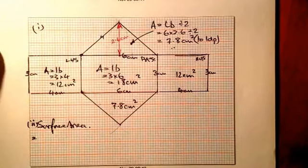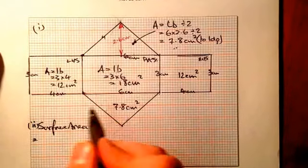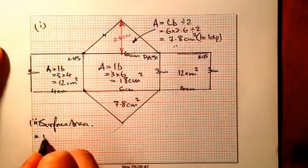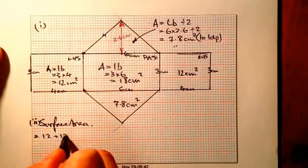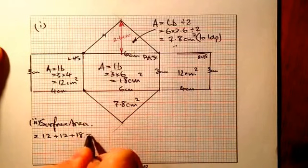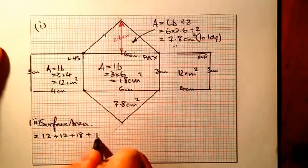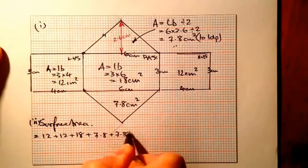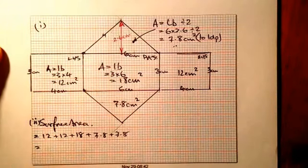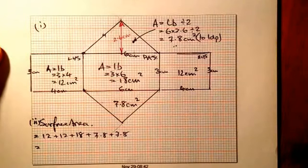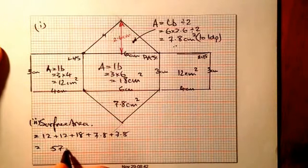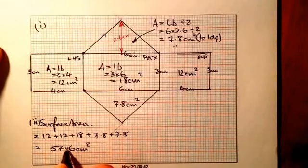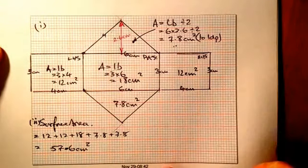This one here must also be the same size, because they're opposite triangles of the prism. Adding it all up: twelve plus twelve plus eighteen plus 7.8 plus 7.8 gives 57.6 centimetres squared for the surface area.